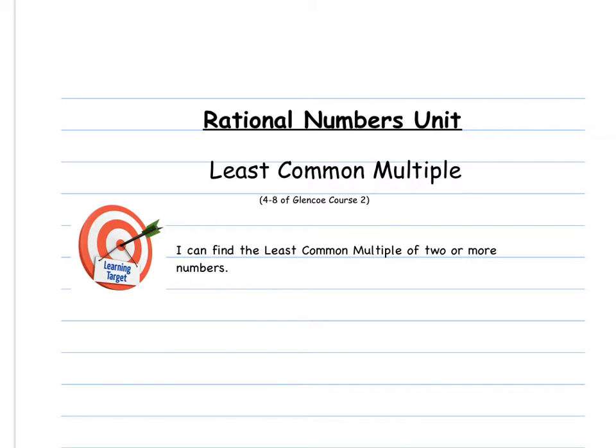Hello boys and girls, welcome to your least common multiple video lesson in your rational numbers unit. This is lesson 4-8 in your Glencoe Course 2 textbook, and the target is I can find the least common multiple of two or more numbers. So this is the opposite, kind of, of our greatest common factor. Instead of greatest, we're looking at least, and instead of factor, we're looking at multiple. We're looking for the smallest number that both numbers can be multiplied to.